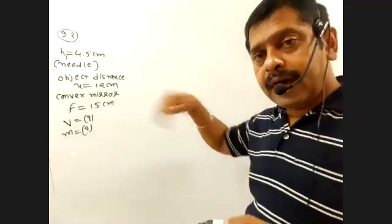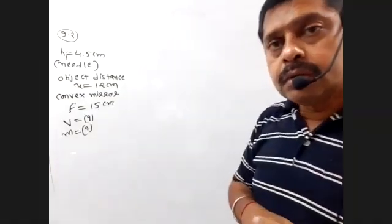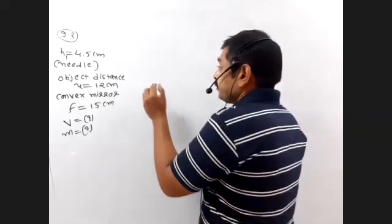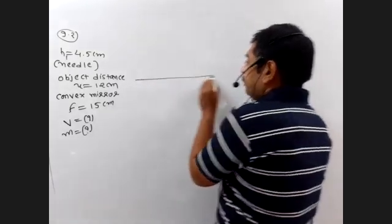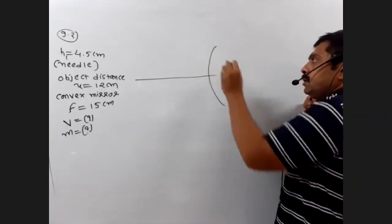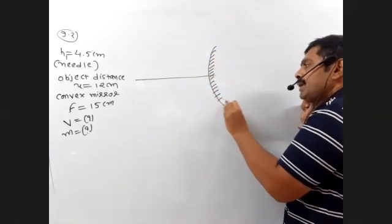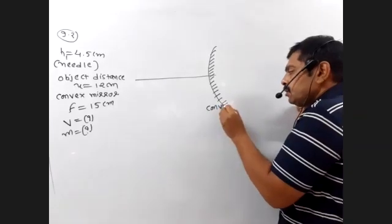If we go back to the needle, we will find the final answer. So, this is our external part, the reflecting surface. This is our convex mirror.